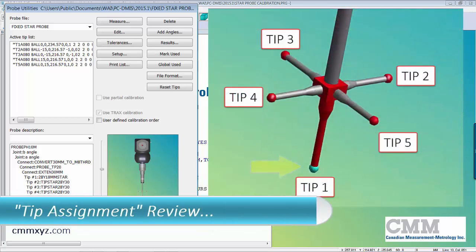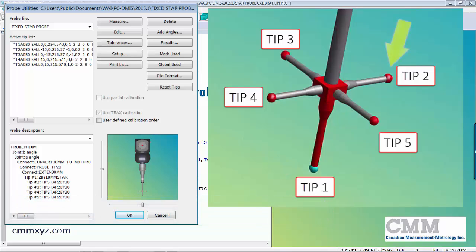You can see tip 1 is pointing down in the Z minus, tip 2 is X plus, tip 3 Y plus, tip 4 pointing to the left is X minus, and tip 5 is Y minus pointing to the operator.